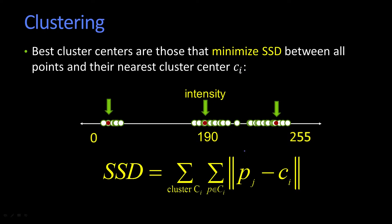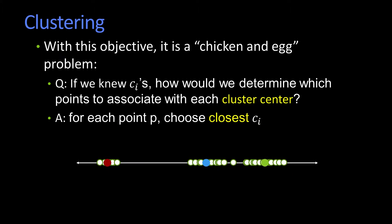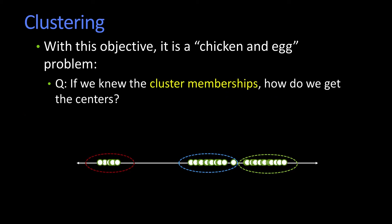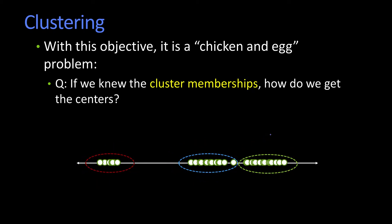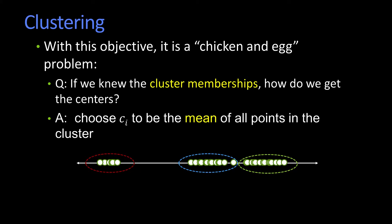The challenge in finding these clusters is that it's a bit of a chicken-and-the-egg problem. Suppose we knew where the cluster centers were — here, here, and here. If we knew those were the cluster centers, which points would we assign to each cluster? That would be pretty easy: we would assign each point to whichever cluster center it was closest to. On the other hand, what if instead of knowing the cluster centers, all we knew was the cluster memberships — which points belong to which clusters? The question is: if I knew which clusters the points belong to, where would I put the centers? I would put the centers at the mean — the average of each of the points in their cluster.